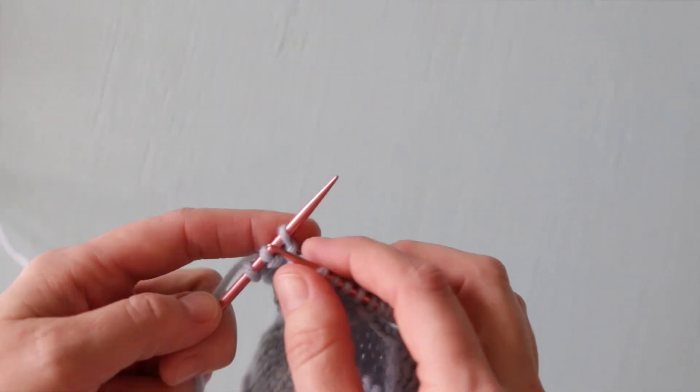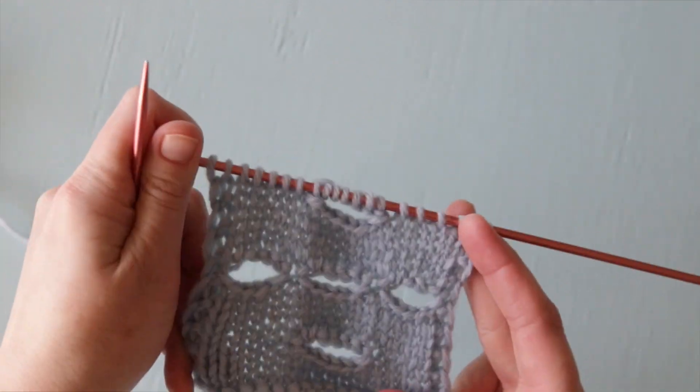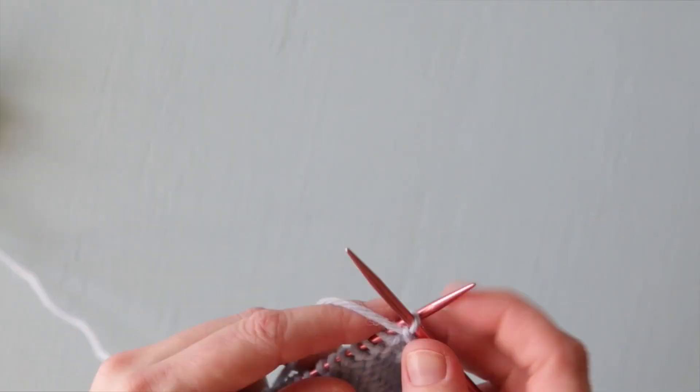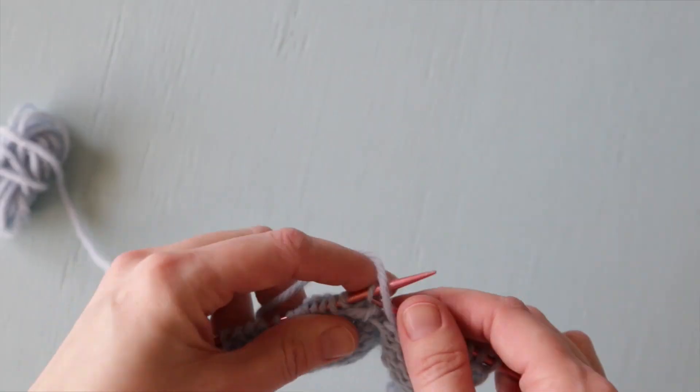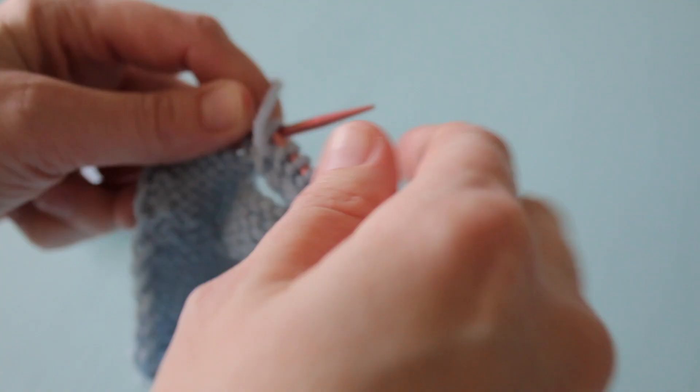I'm going to speed things up here and work another wrong side row so you can see what the one-row buttonhole looks like right here at the end of the row it's worked on and how it looks after you've worked a row or two.